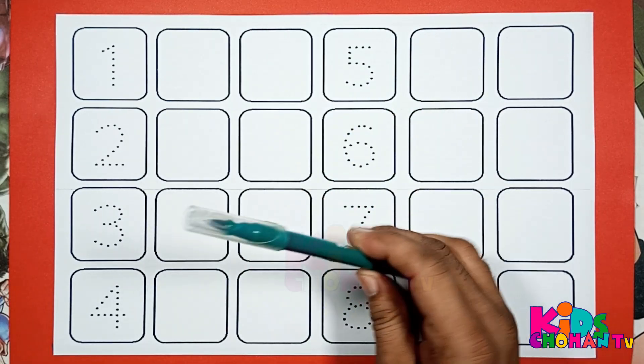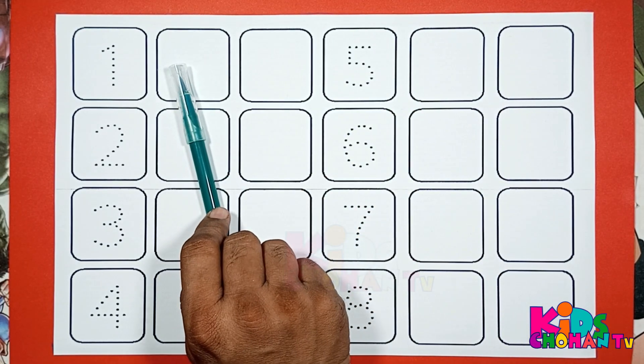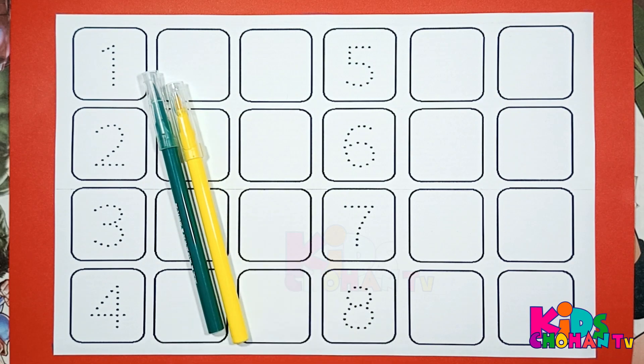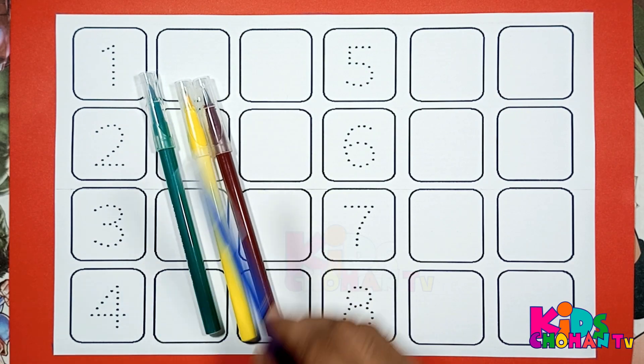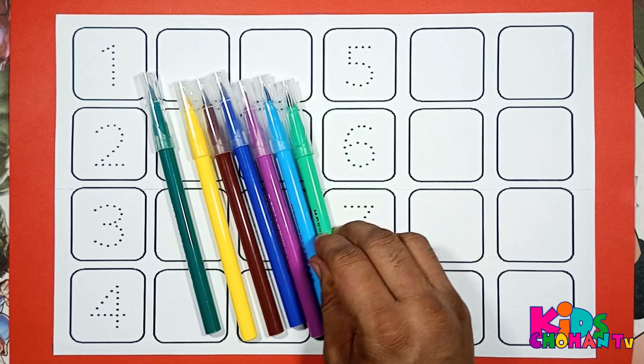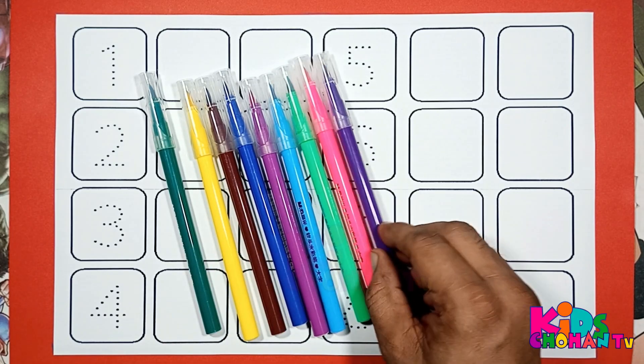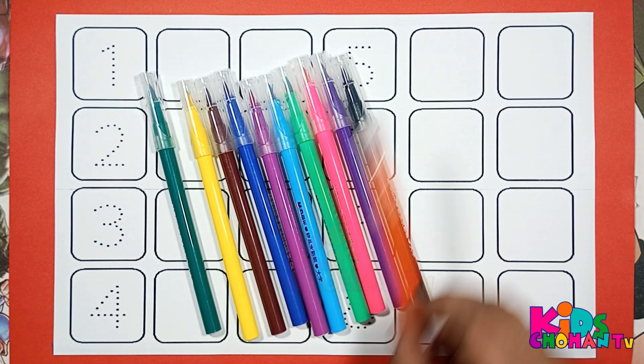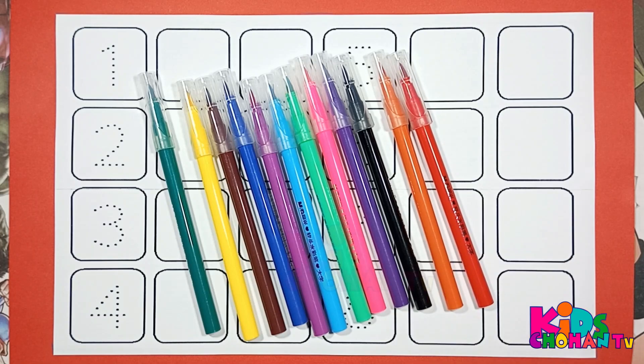Hi kids, welcome back. Let's learn color's name. Green, yellow, brown, blue, purple, sky blue, light green, pink, white, black, orange, and red color.